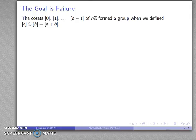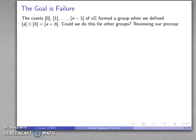So to recap, our cosets 0, 1, and so on up to n minus 1 of nZ do actually form a group when we define the sum of the cosets by the sum of the coset representatives, and the question at hand is can we do this for other groups?